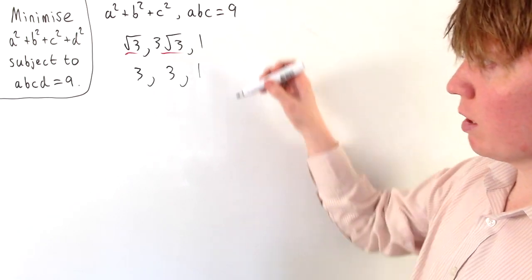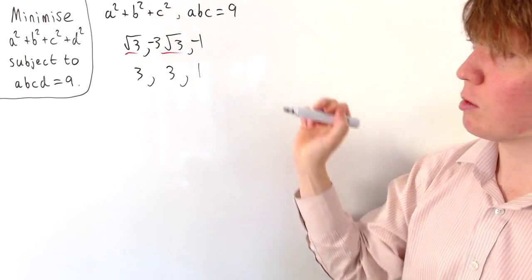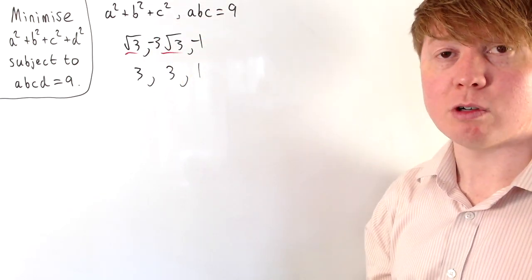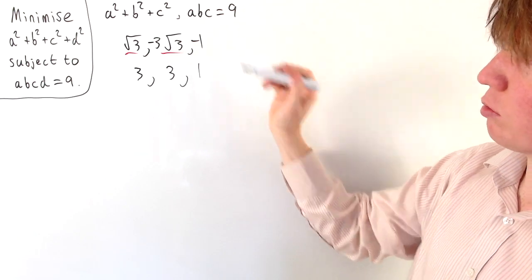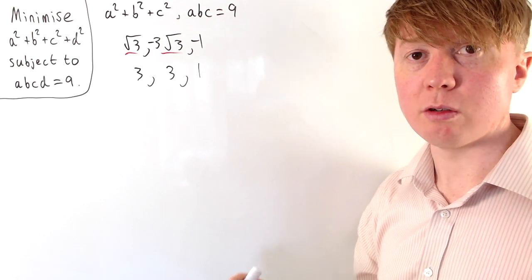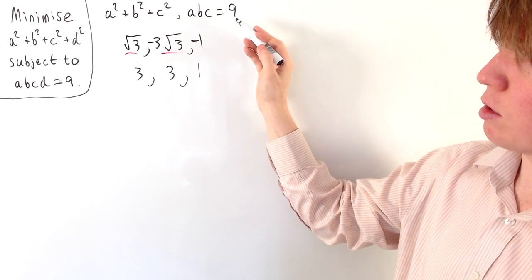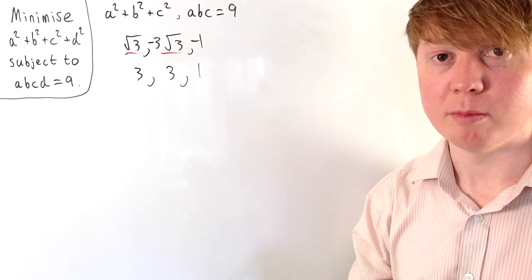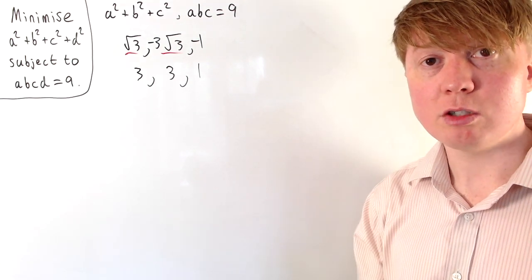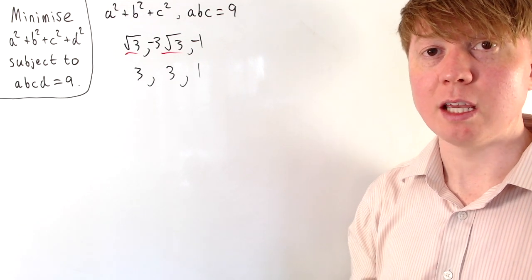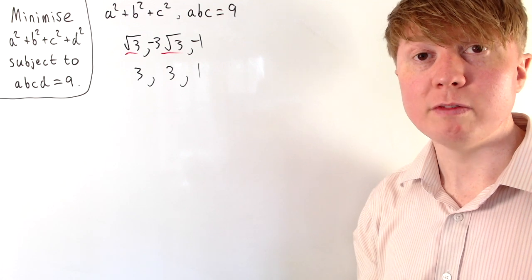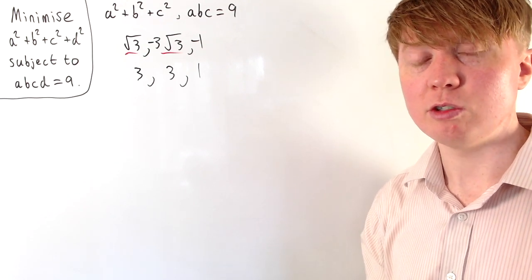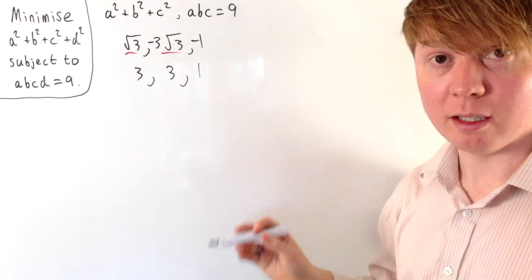We can also handle negatives: whether a, b, c are positive or negative doesn't affect the value of a² + b² + c². If you have two negatives, you can replace them with their positive counterparts and still satisfy the product constraint with the same sum of squares. The same logic applies to the original four-variable problem — if you have a minimum involving negatives, replace them with positives and you get another valid minimum. So we can proceed assuming a, b, c, and d are all positive.